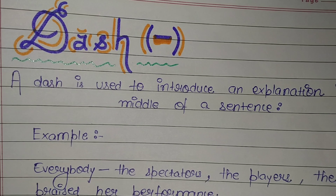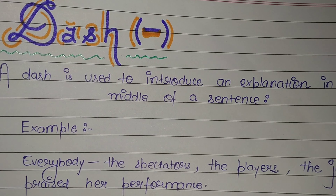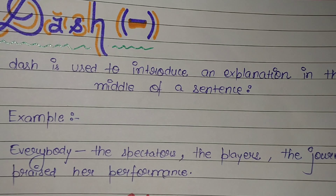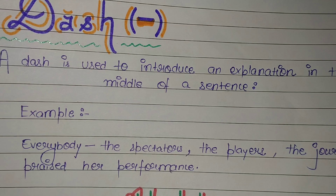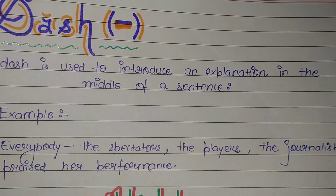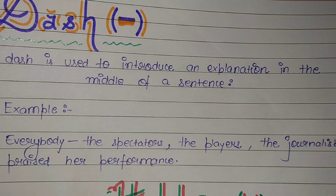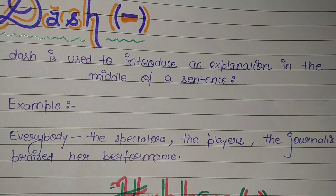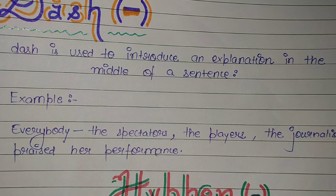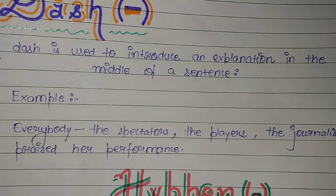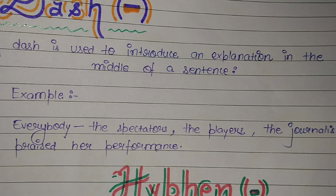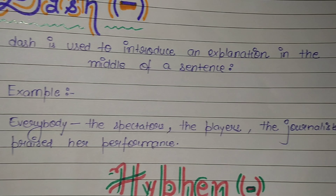Next is the dash. A dash is used to introduce an explanation in the middle of a sentence. Example: 'Everybody — the spectators, the players, the journalists — praised her performance.'